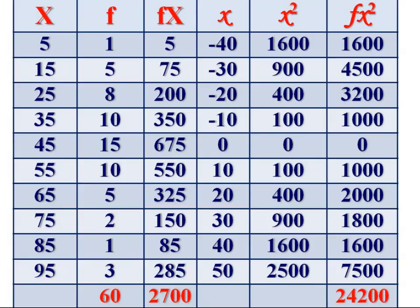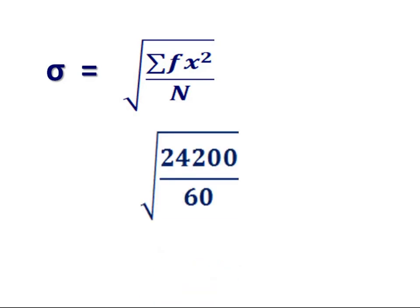Then apply equation. Standard deviation, sigma is equal to square root of sigma fx square by n. Square root of 24,200 divided by 60. That is 6.35. The standard deviation of the series is 6.35.